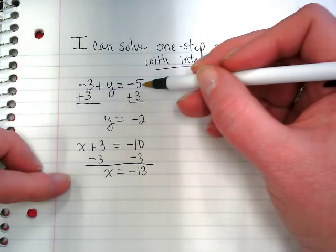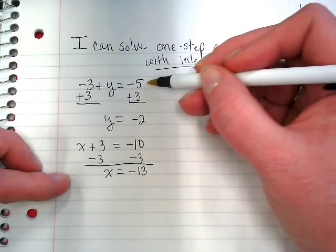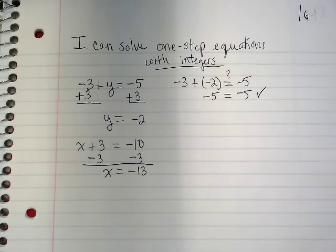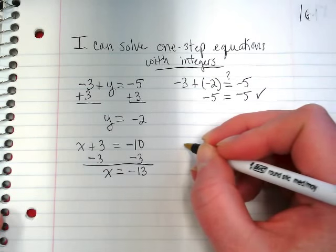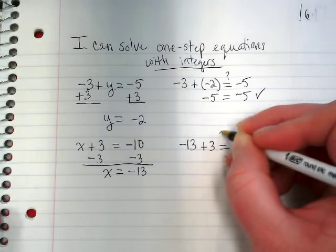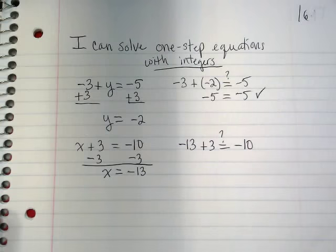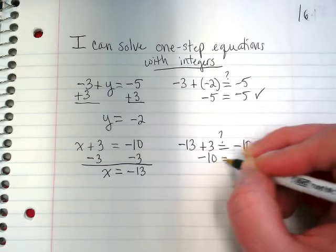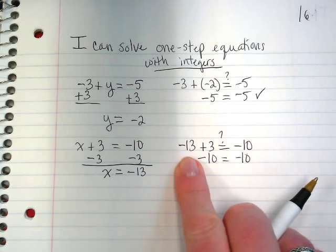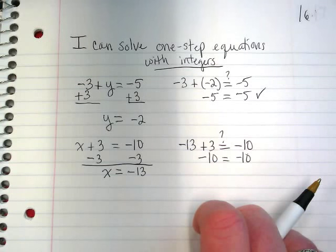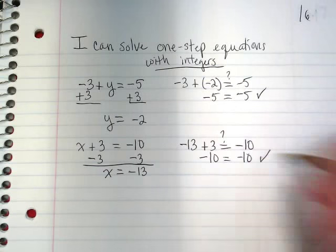Remember when it has the same sign, we put them together and keep the sign. Up here we have the example with different signs. The number furthest from 0 keeps the sign. Let's go back and check that. Negative 13 plus 3. The question is, does it equal negative 10? It does equal negative 10 because negative 13 is furthest from 0. And that checks.